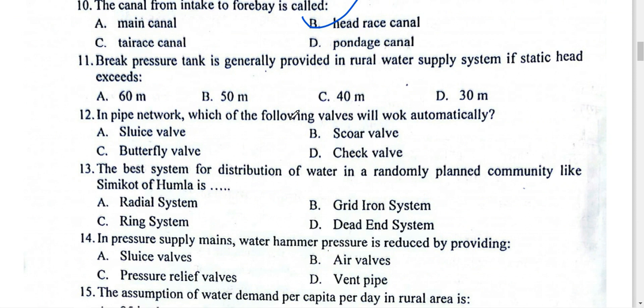A break pressure tank (BPT) is only provided in rural water supply systems when the static head exceeds 60 meters. The BPT is provided so that the body pipe will be protected in the rural water supply system. When the static head is 60 meters, BPT is provided.